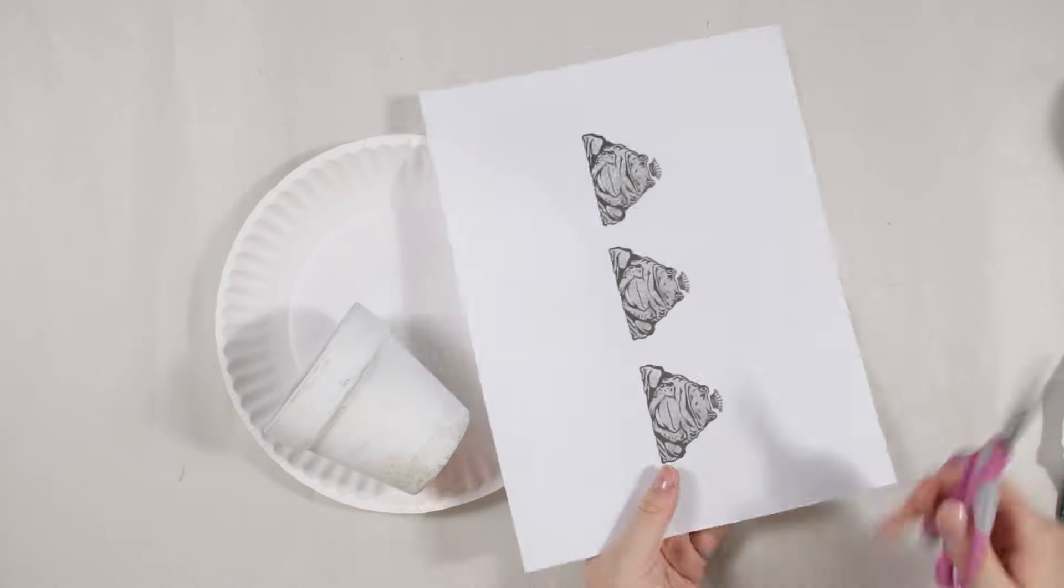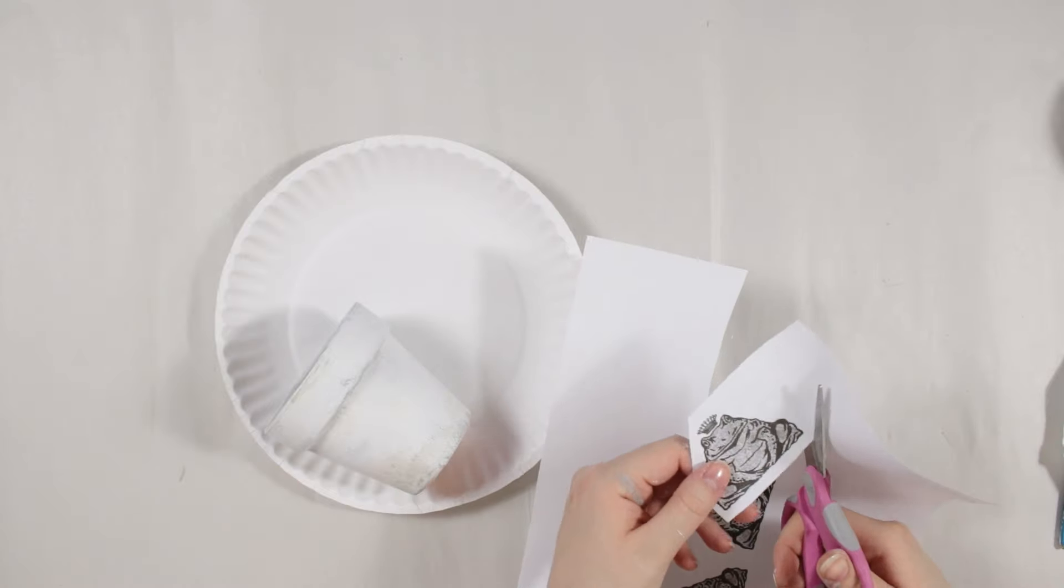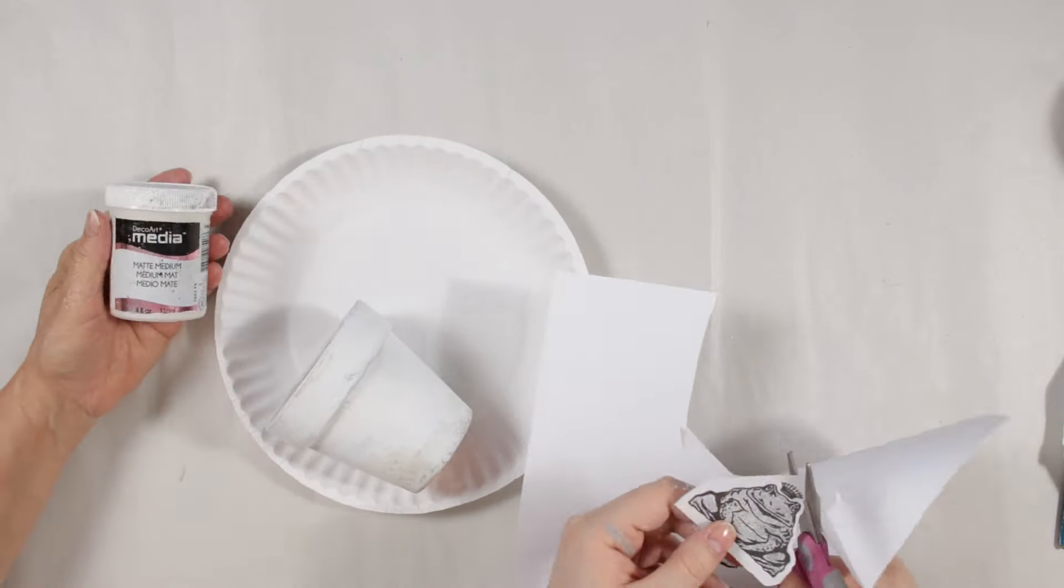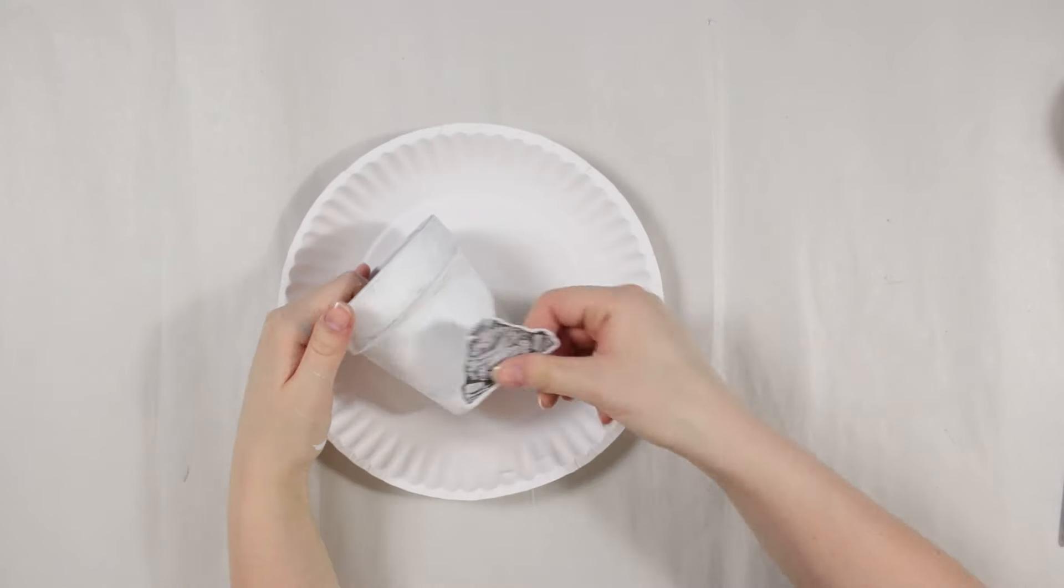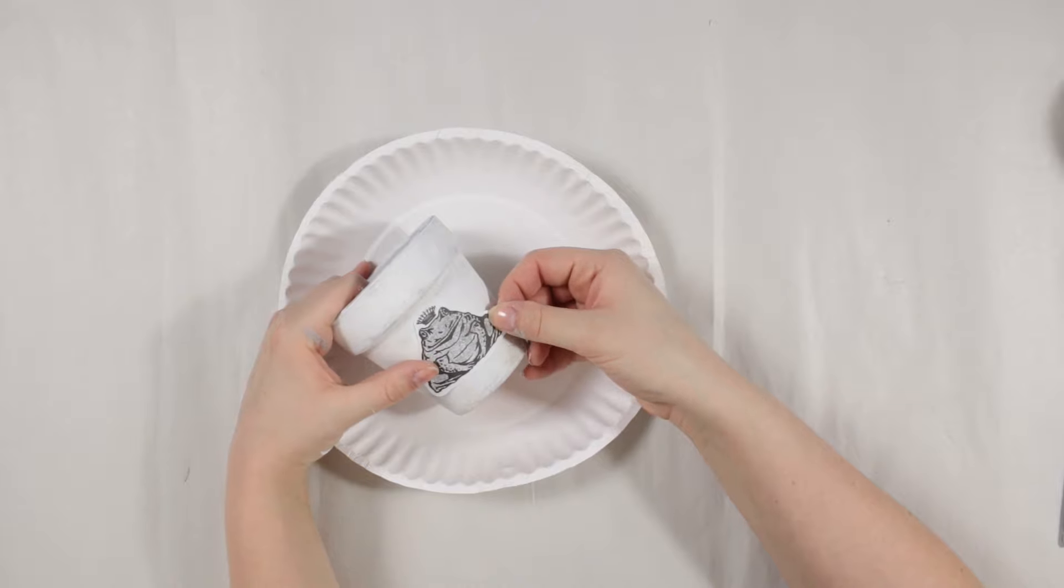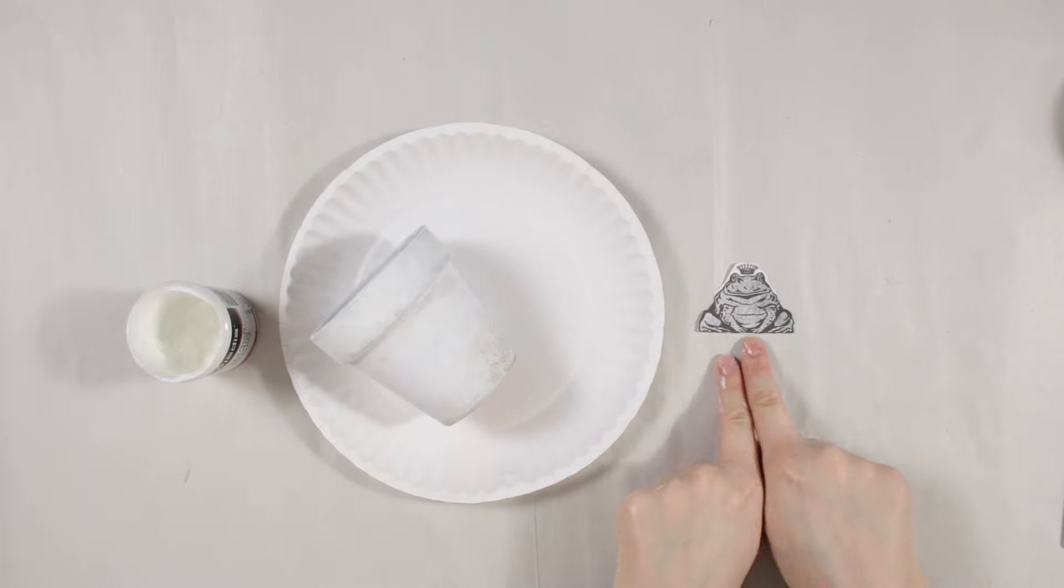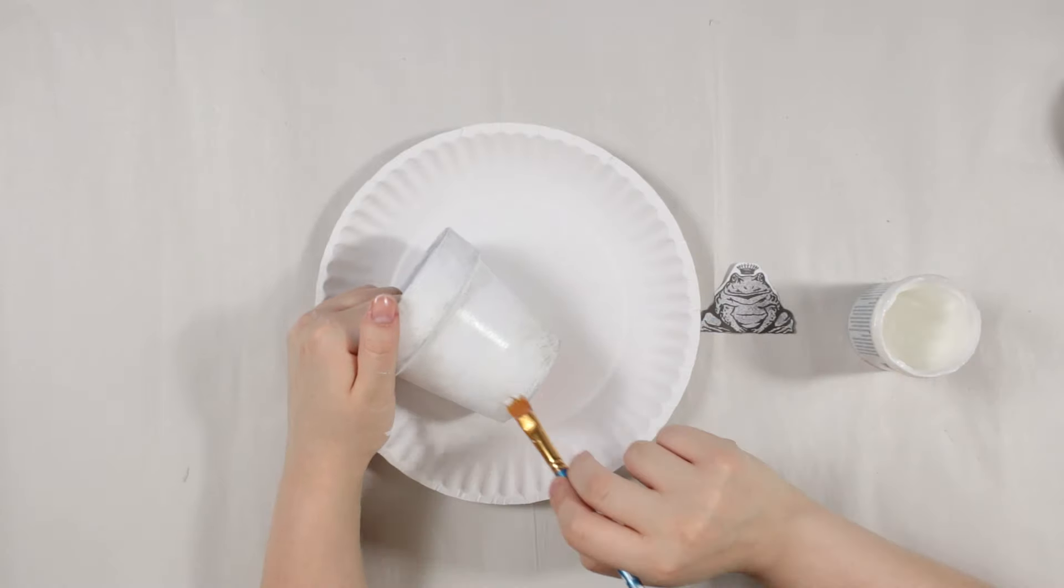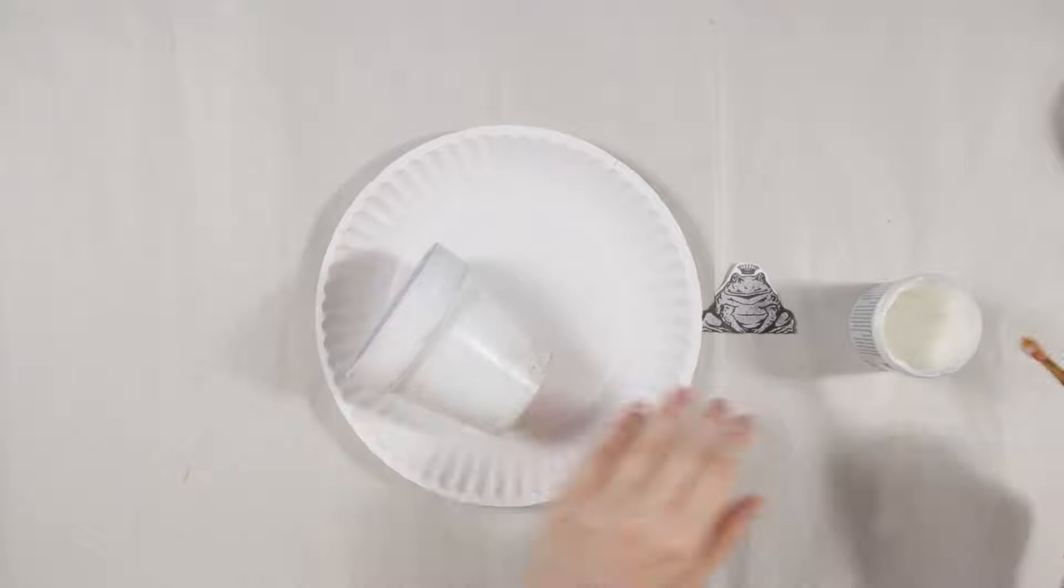Okay, so for my image transfer I made this little frog guy that I printed out on inkjet printer. He's going to be available to download so you can use him too. So I'm going to be using a matte acrylic medium. Right now I'm just lining him up where I want him to go. I'm going to be painting the surface of the pot where I want the frog to be as well as onto the frog itself.